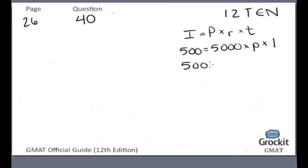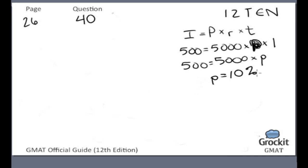So we have $500 equals $5,000 times P. What percent interest of $5,000 gives us $500? The rate of interest P is 10%. Now our new equation is $500 equals the unknown principal times K percent times one year. It's time to look at the statements.